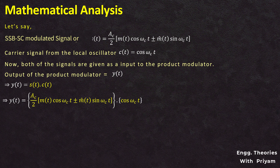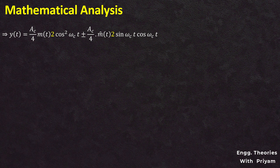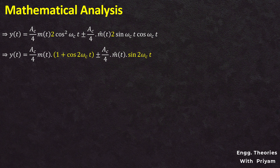Multiplying cos(ωc·t) into both terms: y(t) = (Ac/2)·m(t)·cos²(ωc·t) ± (Ac/2)·m̂(t)·sin(ωc·t)·cos(ωc·t). Dividing and multiplying both terms by 2, then applying trigonometric identities — 2cos²(ωc·t) = 1 + cos(2ωc·t) and 2sin(ωc·t)·cos(ωc·t) = sin(2ωc·t) — the equation becomes: y(t) = (Ac/4)·m(t)·[1 + cos(2ωc·t)] ± (Ac/4)·m̂(t)·sin(2ωc·t).